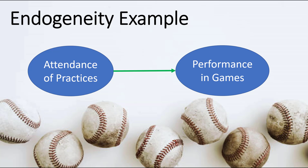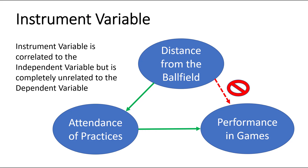To give some context with indigeneity, let's use a simple example. Let's say we're talking about youth baseball and we want to figure out what influences kids' performance in their baseball games. We figured out that the number of practices they attend is going to positively influence their performance in games. So the IV is attendance and the DV is performance in games. But how do we know that attendance of practices is actually causing performance? Maybe it's something else entirely.